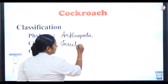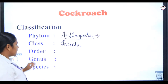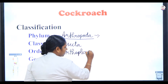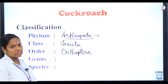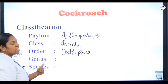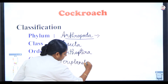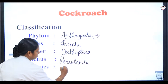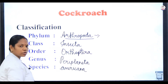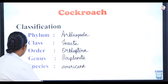Phylum Arthropoda is the largest phylum of Kingdom Animalia. The order is Orthoptera — ortho means straight and pteros means wings. The cockroach possesses straight wings, hence it belongs to order Orthoptera. The genus name is Periplaneta and the species name is americana. So the binomial name of the cockroach is Periplaneta americana. This is the classification of the cockroach — it is an important exam question, so go through it.